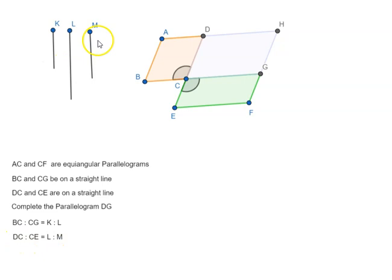Now what we do is again find the fourth proportional to DC, CE and L. So we have magnitudes such that BC is to CG equal to K is to L and BC is to CE as L is to M, and we take the compound of the ratios.